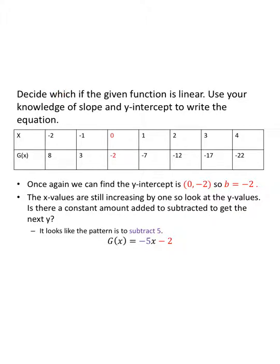Same setup for G of x. I see that (0, -2) is a point on the graph, so if this function is linear, my b value is negative two. The x values increase by one each time. Looking at the y values: to get from eight to three I subtract five, minus five to get negative two, minus five, minus five — I subtract five each time. So minus five is my m value, and G of x equals negative five x minus two. G of x is a linear function.